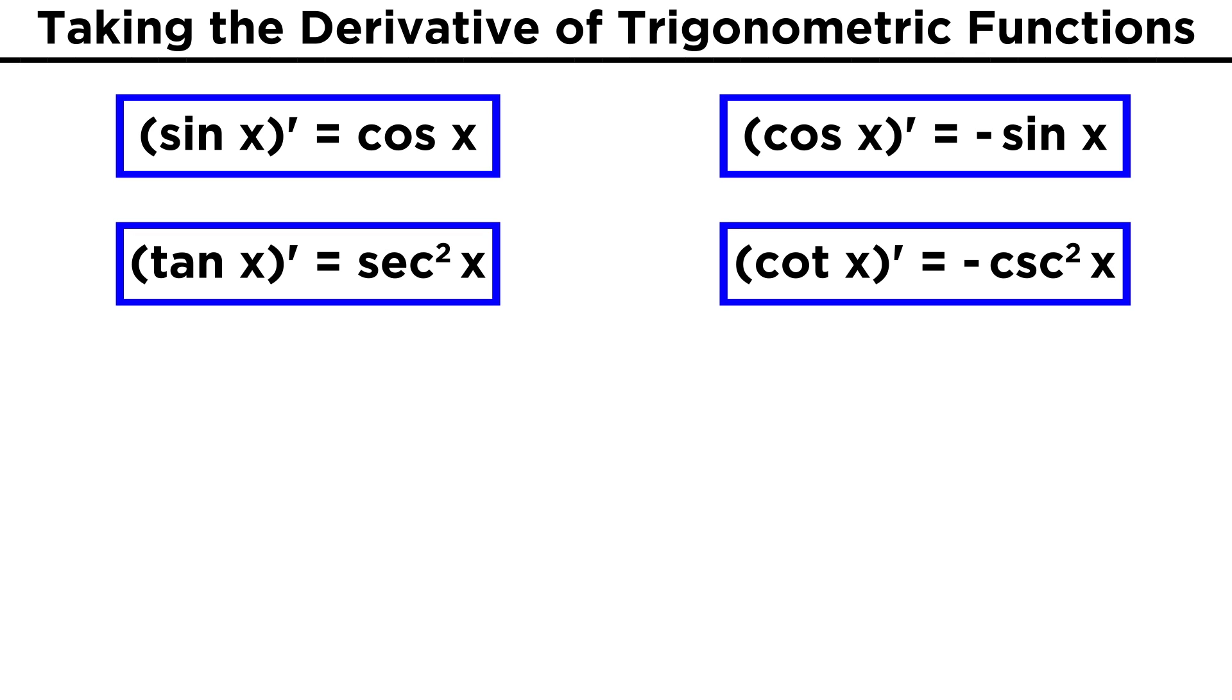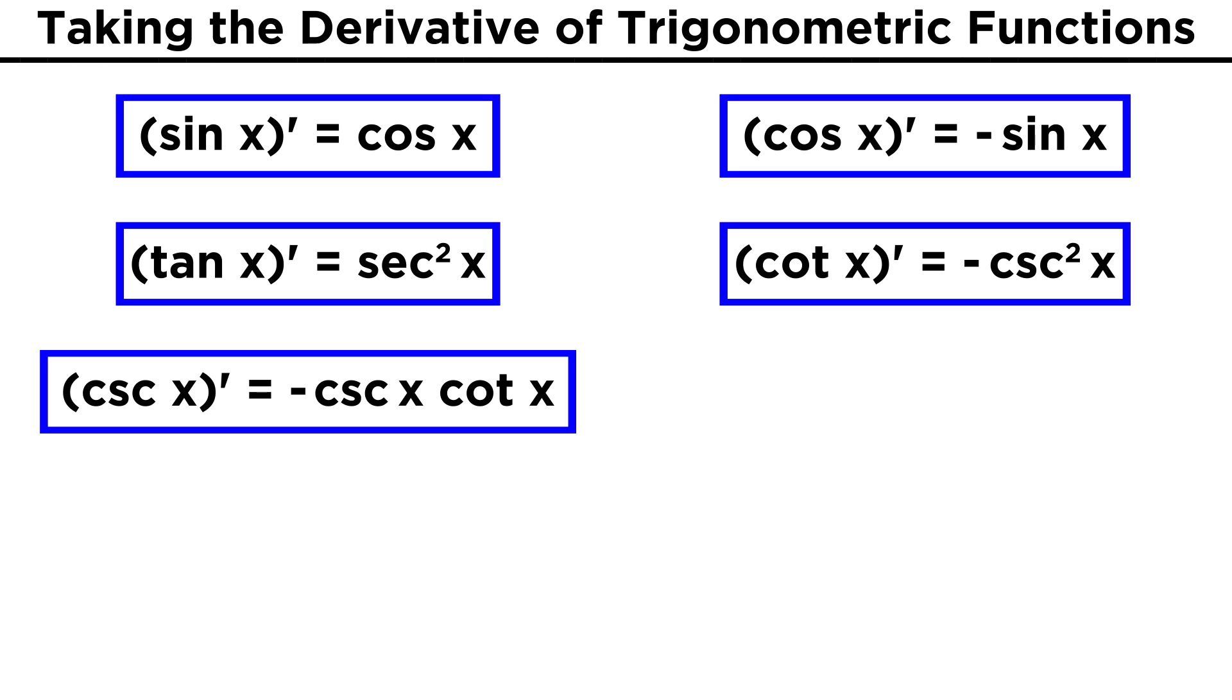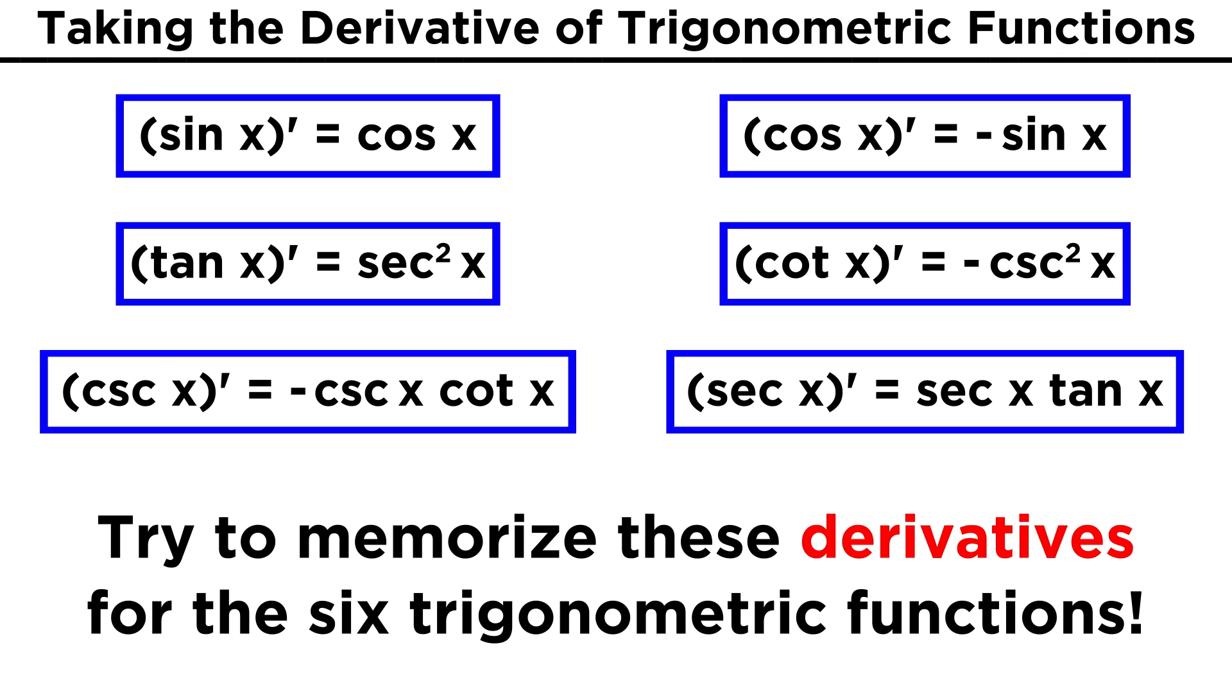Using precisely the same approach, we can get the derivative of cotangent x as being negative cosecant squared x. Finally, we can also get the derivative of cosecant as being negative cosecant cotangent, and the derivative of secant as being secant tangent. So these are the derivatives of the six trigonometric functions, and it may be useful to memorize them.